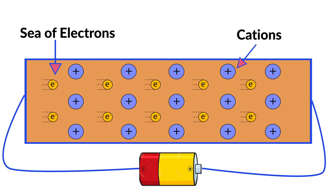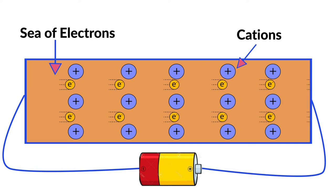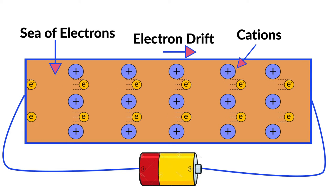When an electric field is applied, these electrons are able to move or flow in a general direction. We call this general direction the electron drift.